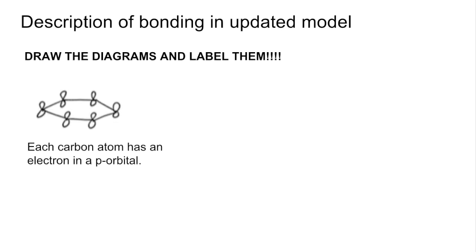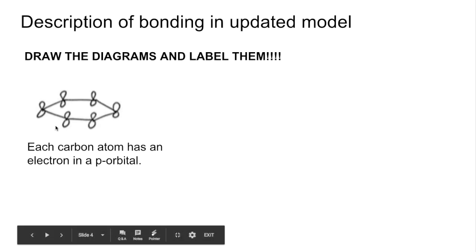So now the description of the bonding in the updated model. And what I tell my students all the time is draw some diagrams. Give yourself something to talk about and label them. So the first diagram I would be drawing is that one there. So what we're showing is the carbon-carbon bonds. And each carbon in the hexagon has got the p-orbital with an electron in there.